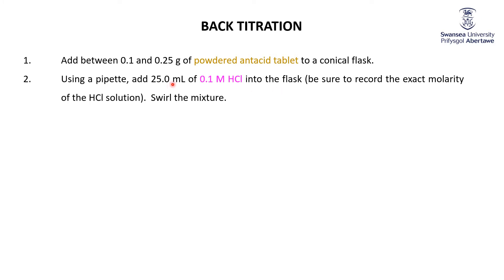Then we add 25.0 milliliters of 0.1 molar HCl using a pipette, so we're trying to be as precise as possible. Now this will be about 0.1 molar HCl, but of course we need to know the moles of HCl. We know the volume precisely, so you need to record the exact molarity of this HCl solution.